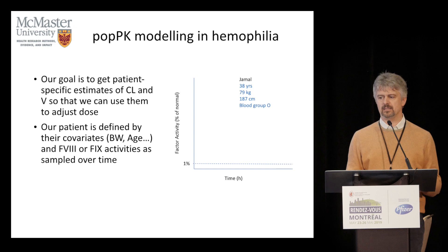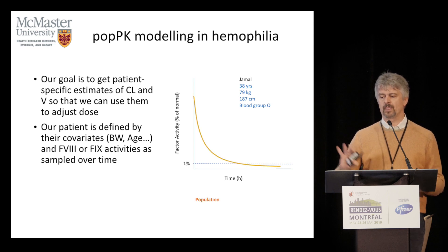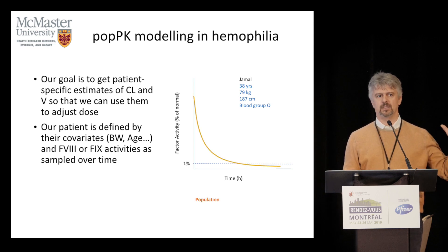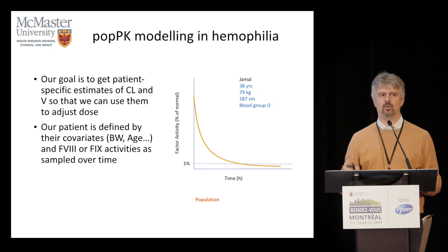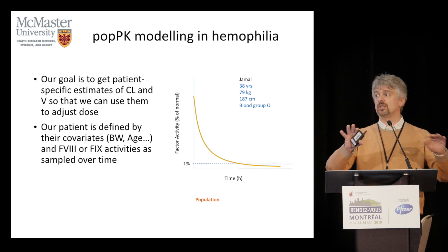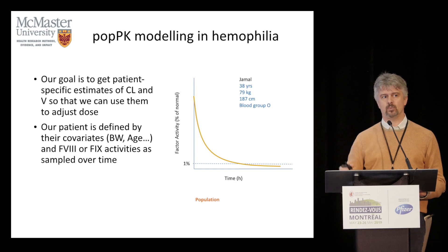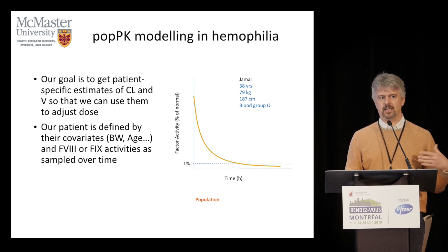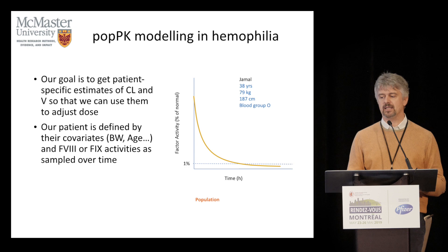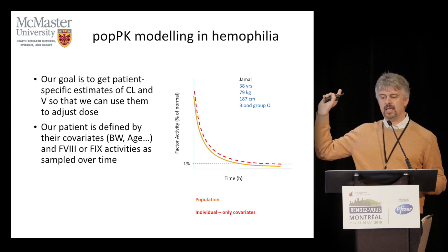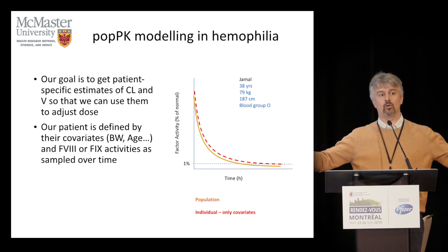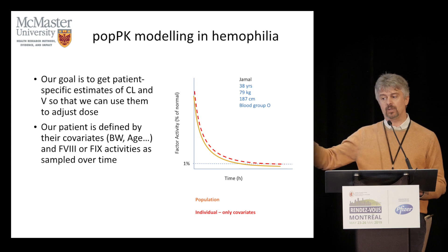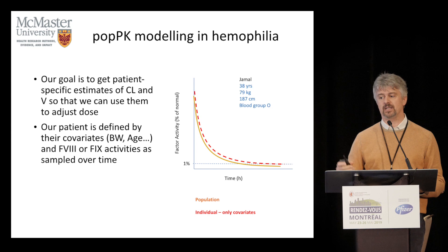So, to lead you through this step by step: if I only know what is in the leaflet — the package of the medication — that's the yellow line; that drug on average in a population goes that way. Now, by studying the population with the numbers we have, I can tell you that for a subject like Jamal, with that age, weight, and blood group, the group of patients like Jamal will go like the red line. I know the shape; I know how it's different from the average.